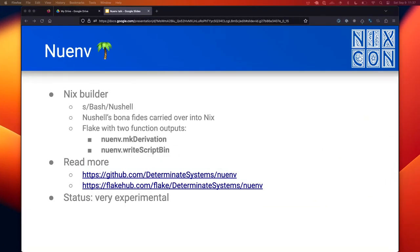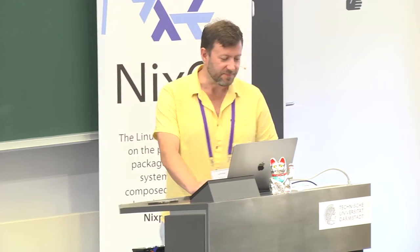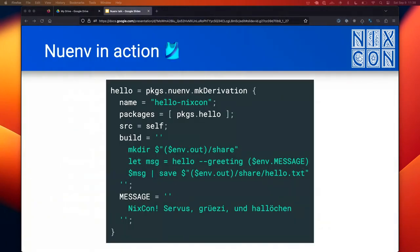The current status of Nuenv is that it's very experimental, largely because Nu Shell is a very much a moving target with tons of unstable syntax and shifting APIs. I currently don't have specific plans for it, but if people think it's cool and it catches on, maybe I'll invest more work into it. Let's look at what Nuenv looks like in Nix.